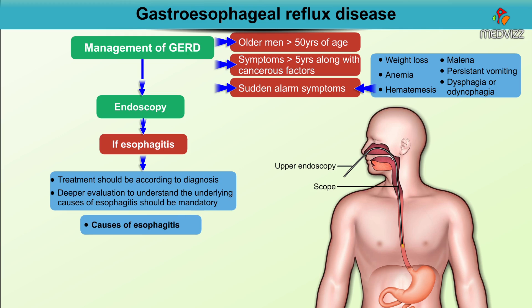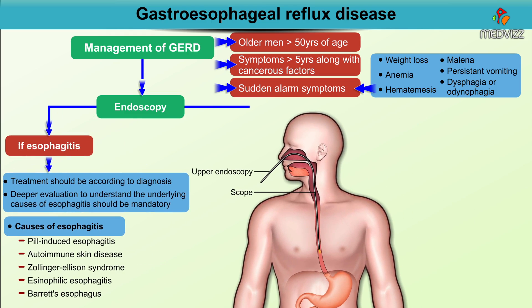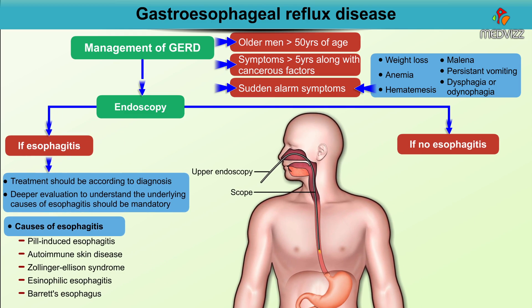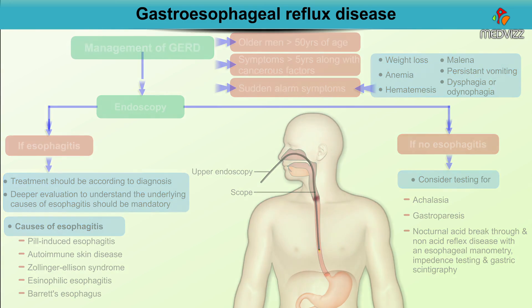Some of the most common causes of esophagitis include pill-induced esophagitis, autoimmune skin disease, Zollinger-Ellison syndrome, eosinophilic esophagitis, and Barrett's esophagus. On endoscopy, if there is no esophagitis, consider testing for achalasia, gastroparesis, nocturnal acid breakthrough, and non-acid reflux disease with esophageal manometry or impedance testing, and in some cases gastric scintigraphy.